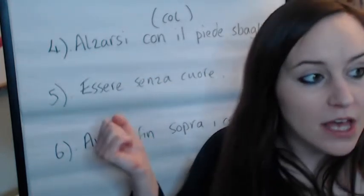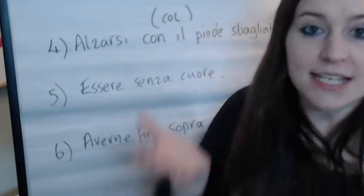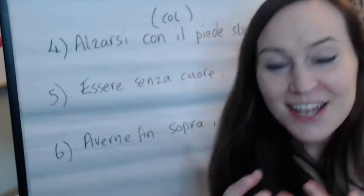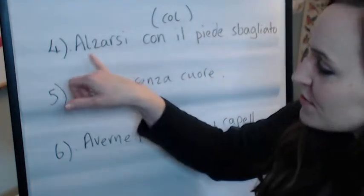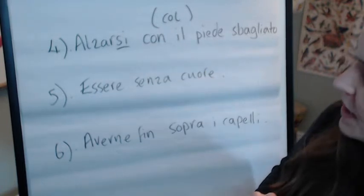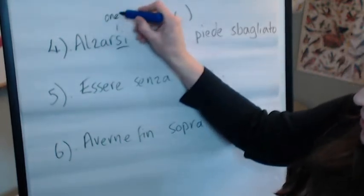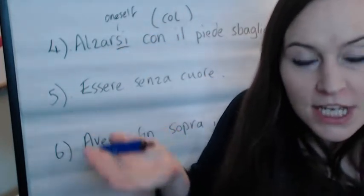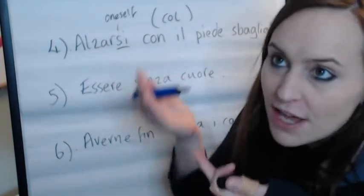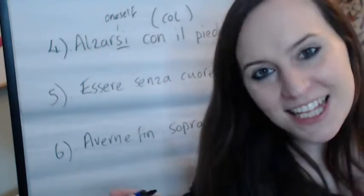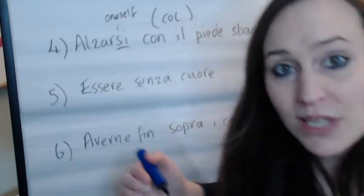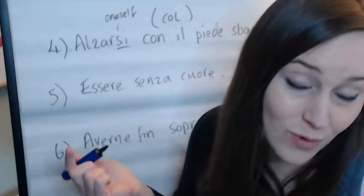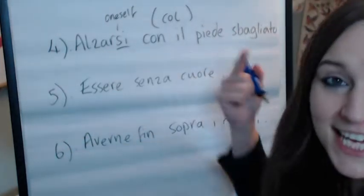Alzare means to raise or to lift in English, so alzarsi is to get oneself up. We just say 'get up' in English — either getting up from a chair or from bed to start the day. Alzarsi con il piede sbagliato — il piede ends with an E so you need to pronounce that E. Piede sbagliato means wrong or incorrect — not the right one.